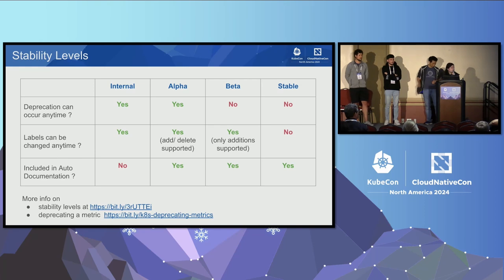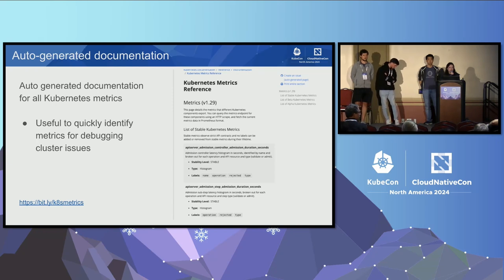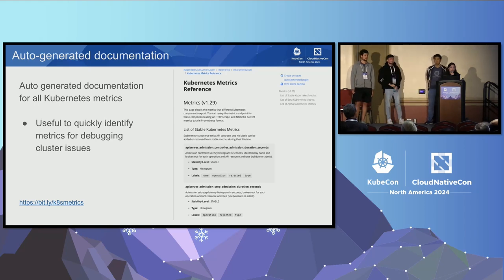We also have very nicely auto-generated documentation for all the metrics that exist in Kubernetes. We've done this through a very elaborate static analysis pipeline which passes through the entire Kubernetes code base, finds all the places where metrics are instrumented, and then generates a nicely formatted document listing all the available metrics. This is especially handy when you're trying to debug an issue in your Kubernetes cluster and want to find out what signals you can look at.